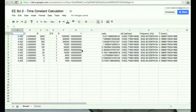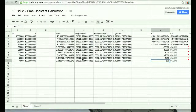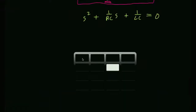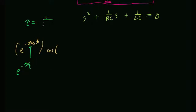For an underdamped system, the decay is given by e^(−zeta·omega_naught·t) times a cosine. If you write that as e^(−t/tau), then the time constant is the reciprocal of zeta·omega_naught. That value is already in the spreadsheet — that's how we got that value.